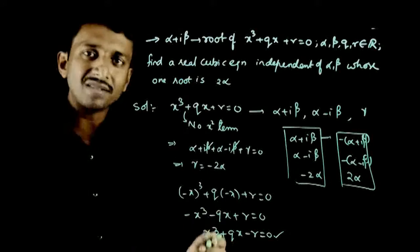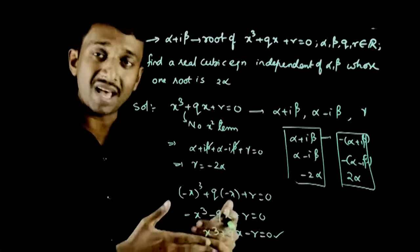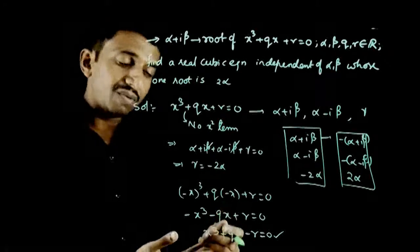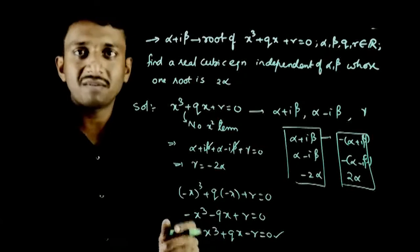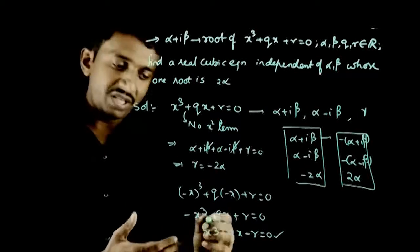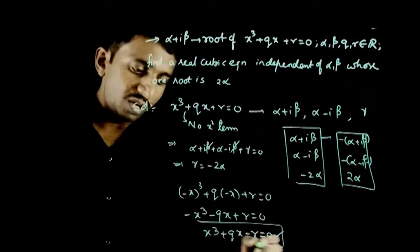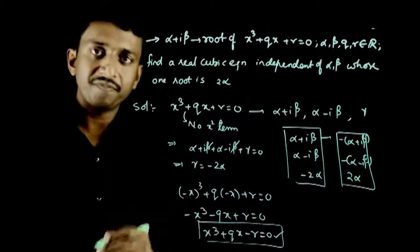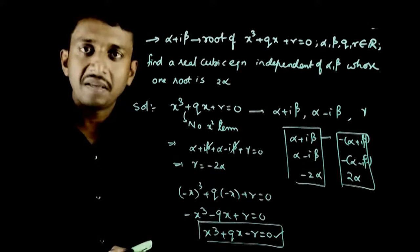There can be many equations whose roots include plus 2*alpha, but this is the best approach. x³ + qx - r = 0 is one valid answer. Thank you.